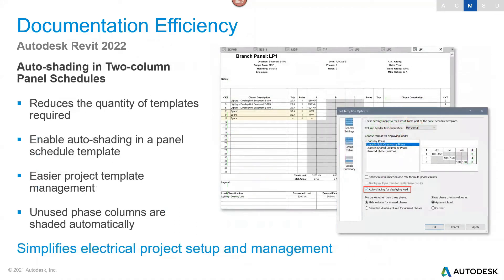Auto shading in two-column panels is an electrical feature. For electrical panel schedules, there are further updates continuing from Revit 2021's very good improvements around circuiting flexibility with panel templates, renaming circuits and prefixing circuits. You're now able to reduce the quantity of templates required, enable shading in the panel schedule template, and generally have easier management of those schedules. With each release they're giving more flexibility rather than limiting how you can format those schedules.